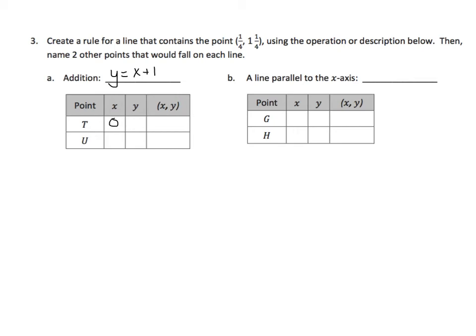And now that we have that rule, we can find pairs of points. So if my x is 0, my y is 1, my ordered pair is 0, 1. Then I could take 4 and add 1 to that. We get 5. My ordered pair is 4 and 5. Now we want one that's parallel to the x-axis. So let's think about this a little bit. We want it to be a horizontal line. And the value for y needs to be 1 and 1/4.